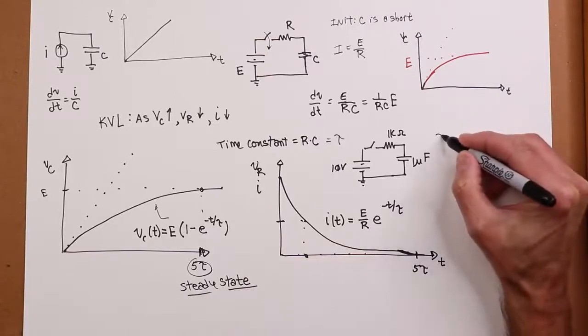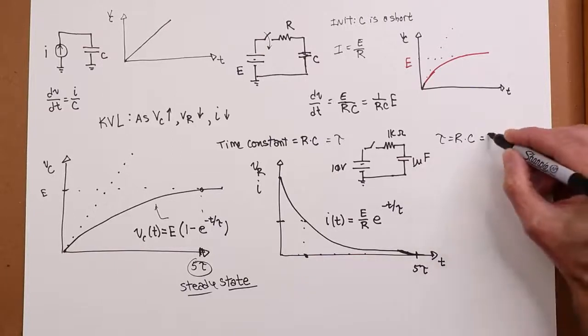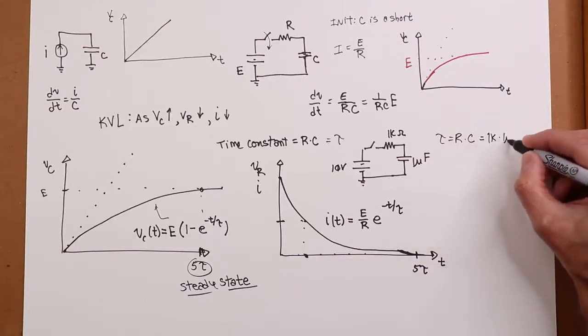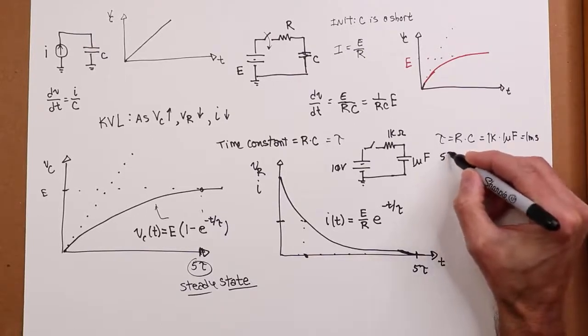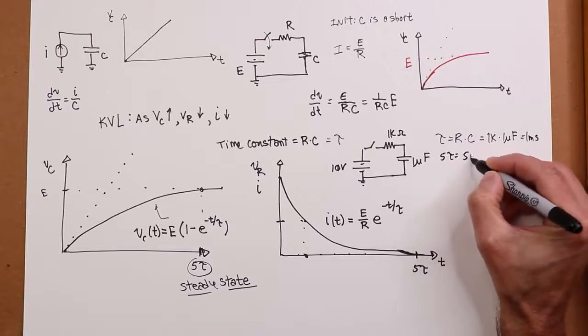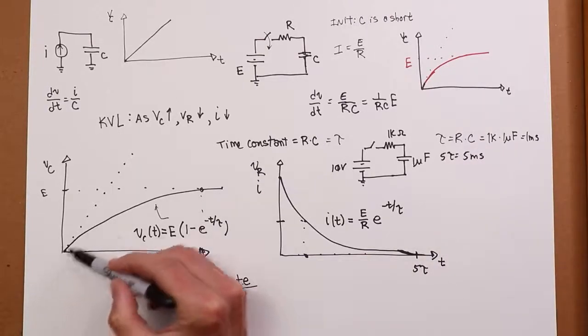So what's tau? It's R times C. So that's 1k ohm times 1 microfarad. The k's and m's will get you millis. So this is equal to 1 millisecond. 5 tau is 5 milliseconds. That's how long it takes for this capacitor voltage to get up.